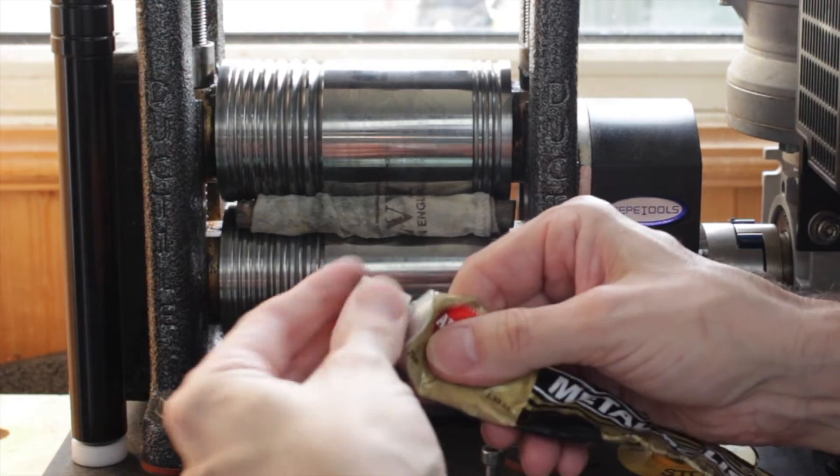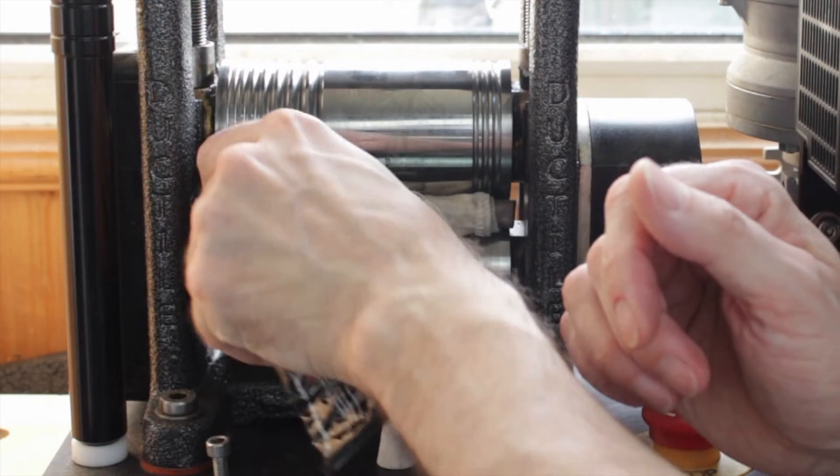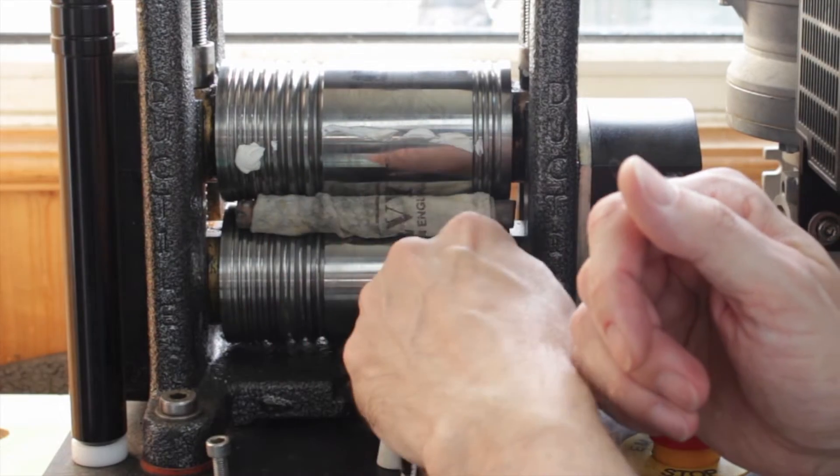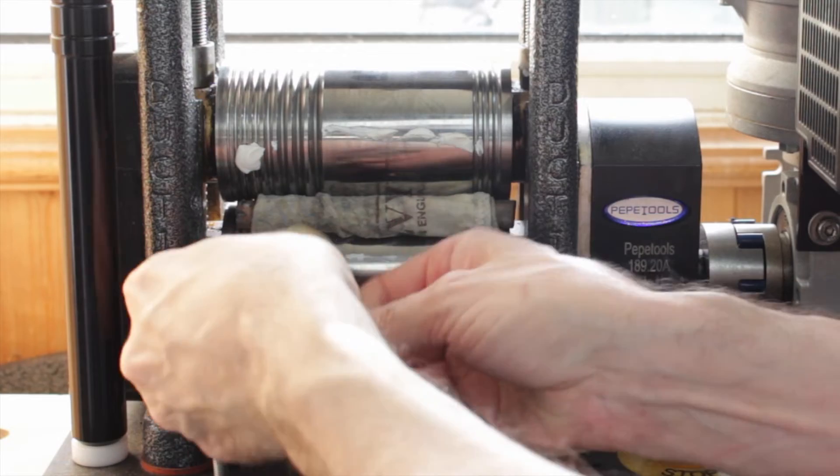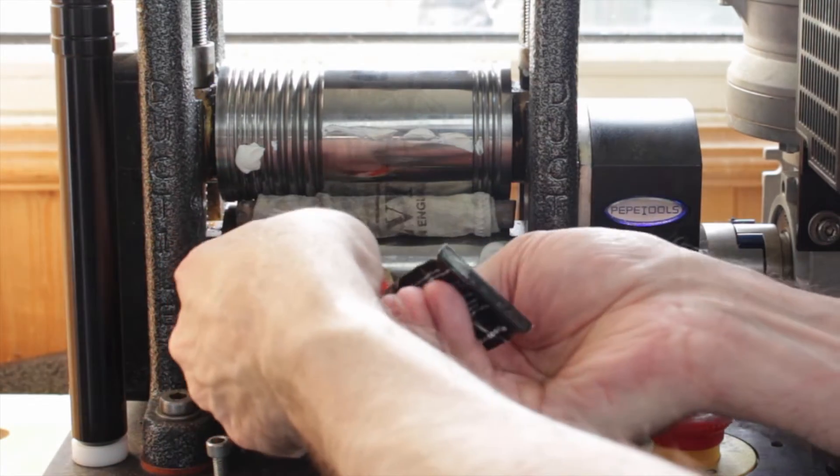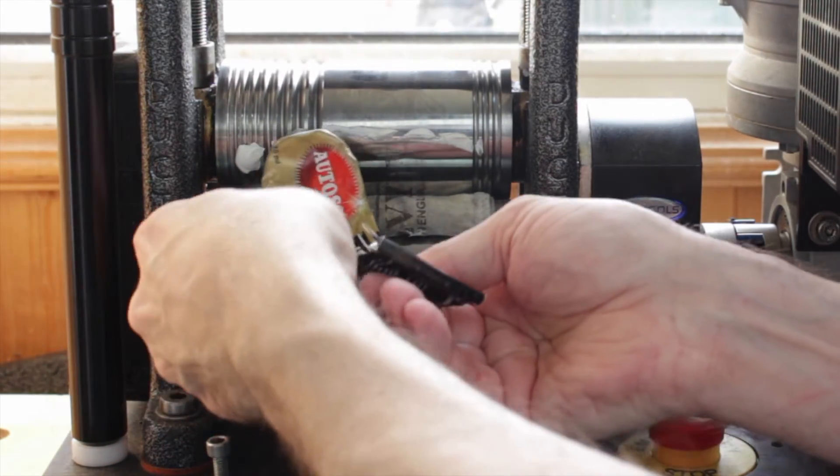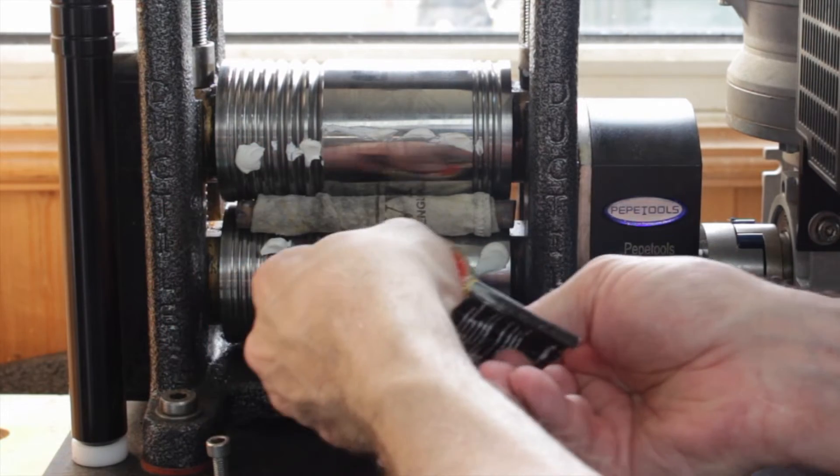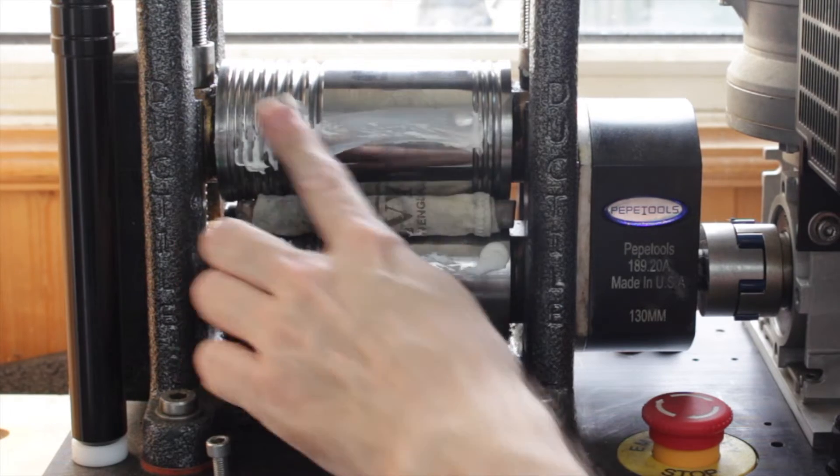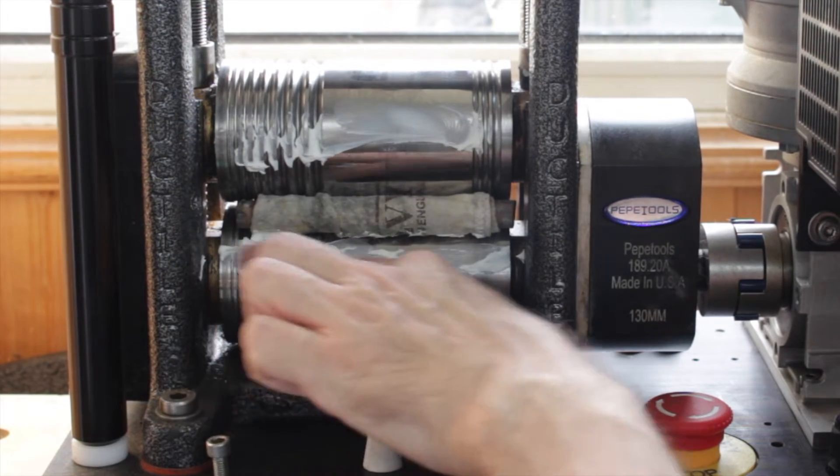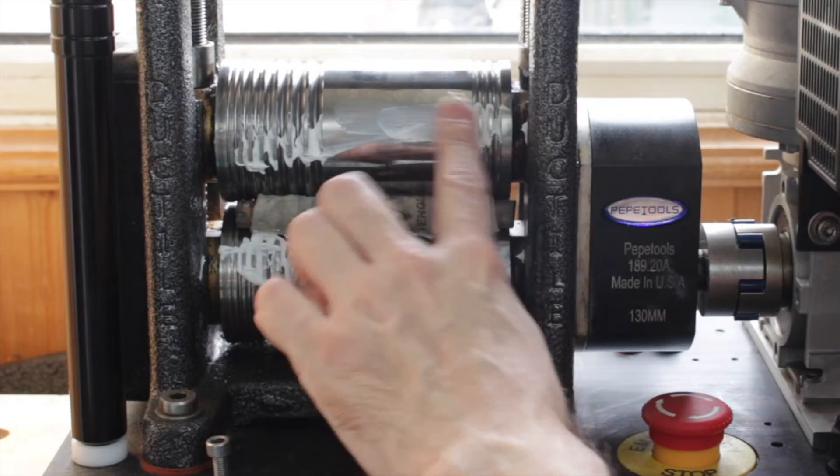So all we do, really easy, just squirt a line across the top roller there, squirt some across the bottom roller. Get it all the way across, be generous with it. And then with your finger, just wipe it all the way across both rollers. Get it all the way across, rub it in.